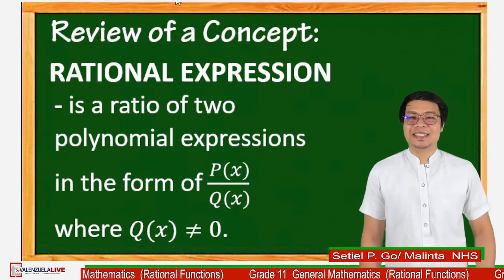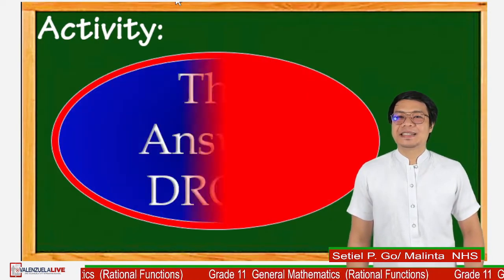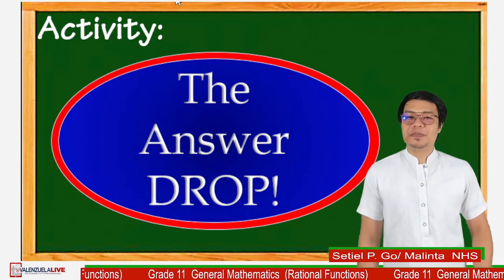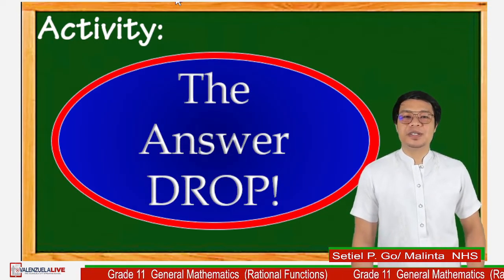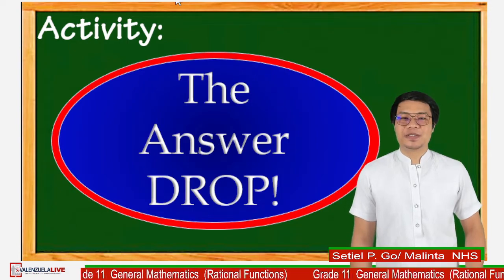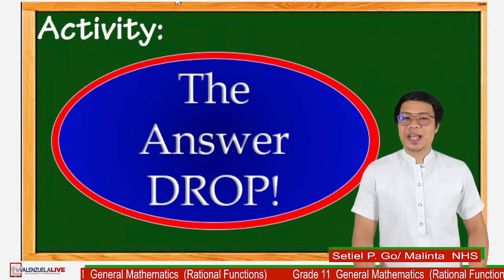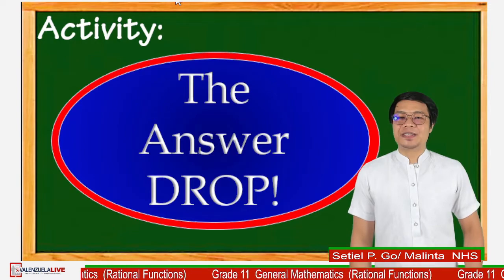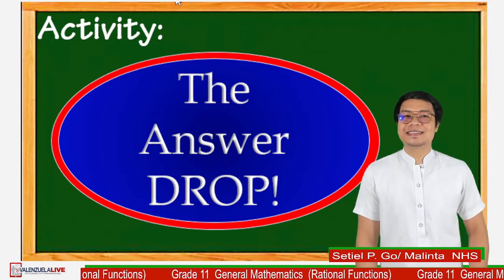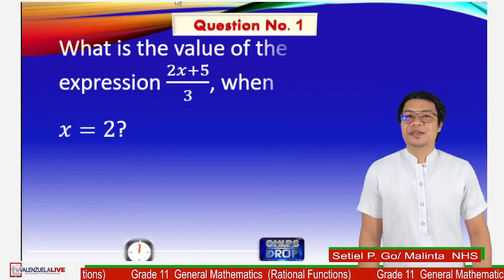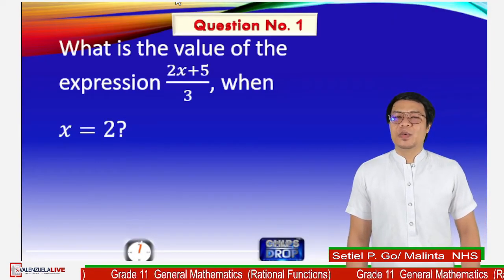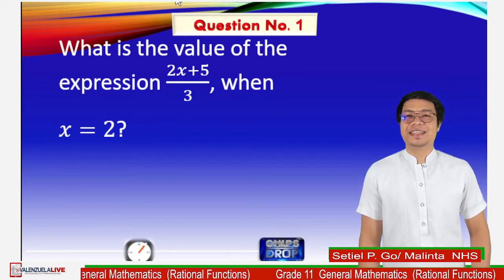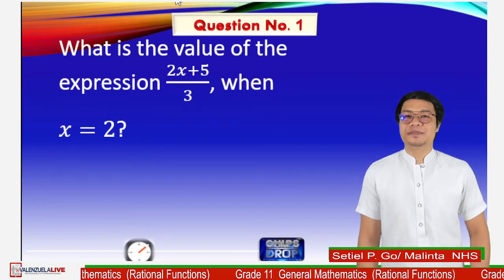To warm up our today's lesson, let us have this activity called the Answer Drop. Perform the operations in the following questions which are related to rational expressions. Drop your answer in the comment box. I will give you 10 seconds to drop your answers. Are you ready? Let's start. Number one: what is the value of the expression 2x plus 5 over 3 when x is equal to 2?